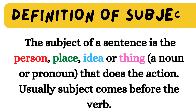When we look at the definition of subject in English grammar, the subject of a sentence is the person, place, idea, or thing — that may be a noun or pronoun — that does the action. Usually, the subject comes before the verb. Now we will discuss each part of this definition individually.